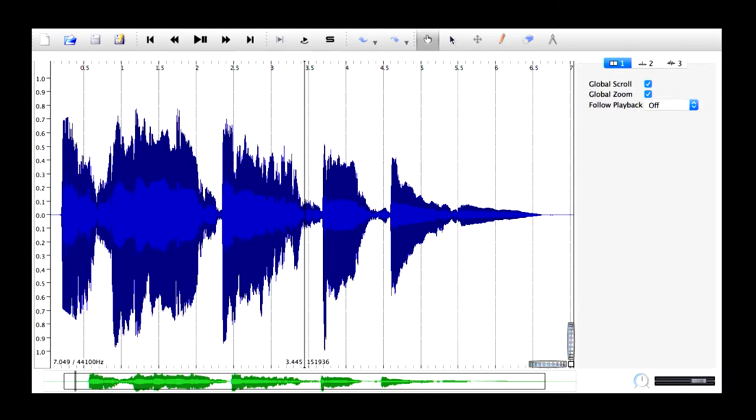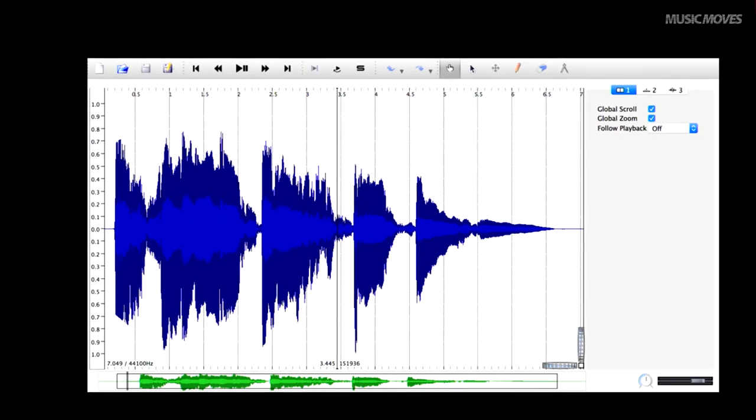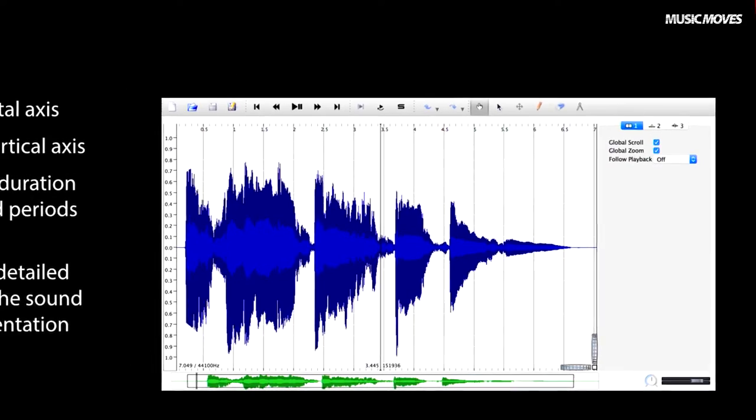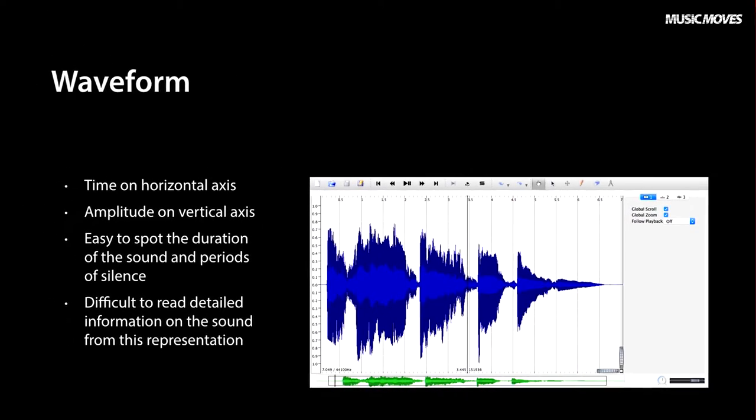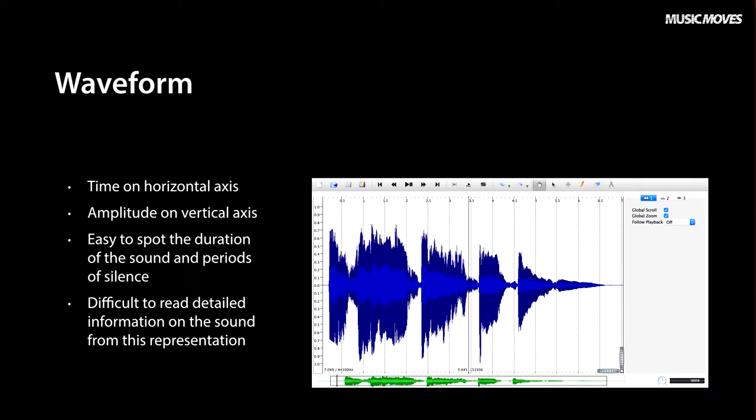This figure shows a waveform representation of a sound signal, with time on the horizontal axis from 0 to 7 seconds and amplitude on the vertical axis. From this representation, it is easy to spot the duration of the sound and the periods of silence.